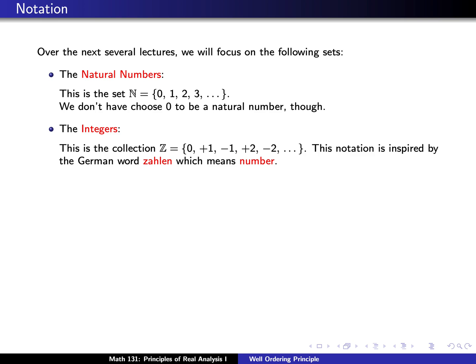We can expand that slightly by looking at the integers. This will be the whole numbers as well as their negatives. So for example the integers would contain 0, plus or negative 1, plus or negative 2, and so forth. This notation is inspired by the German word Zollen, which just means number.